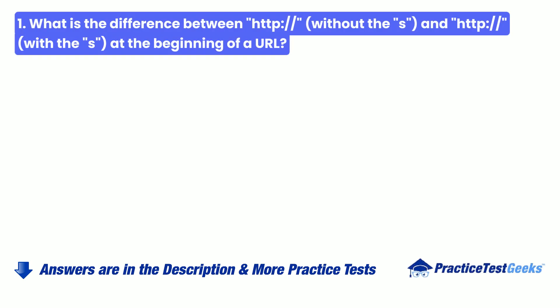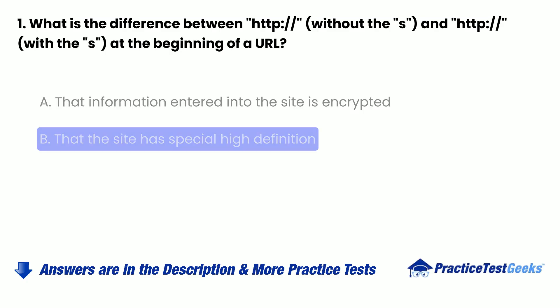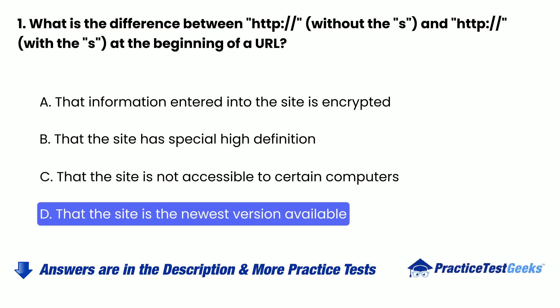Question 1: What is the difference between HTTP and HTTPS at the beginning of a URL? a. That information entered into the site is encrypted. b. That the site has special high definition. c. That the site is not accessible to certain computers. d. That the site is the newest version available.